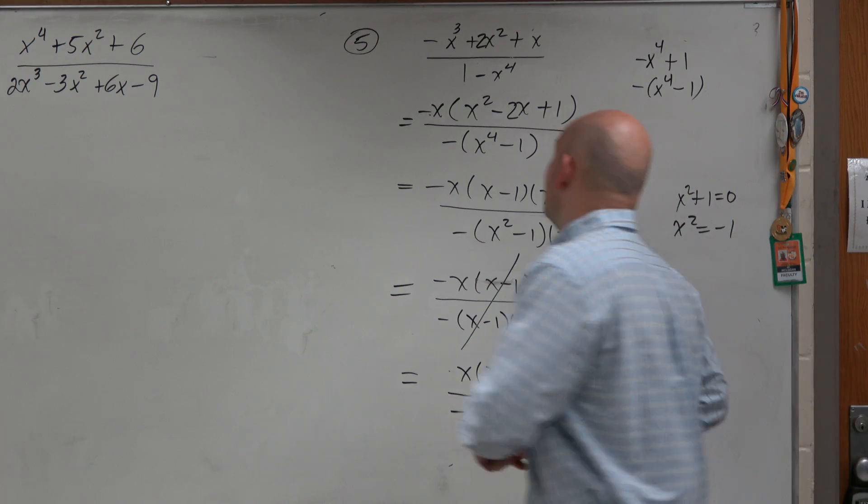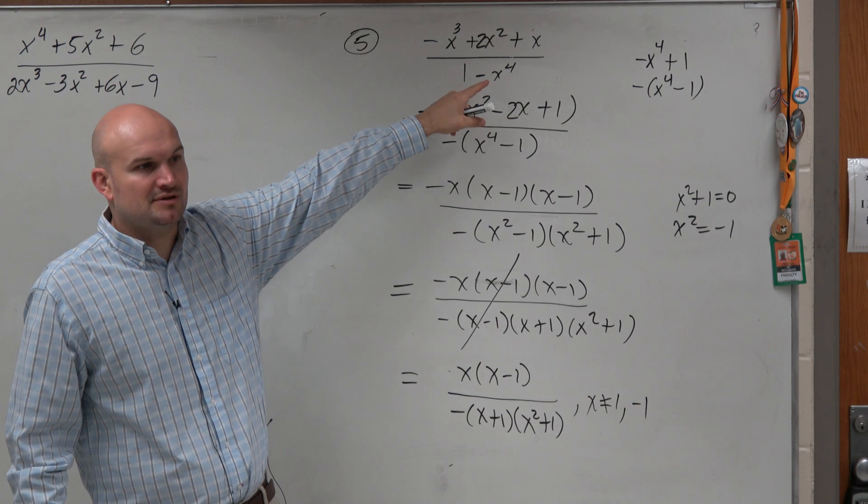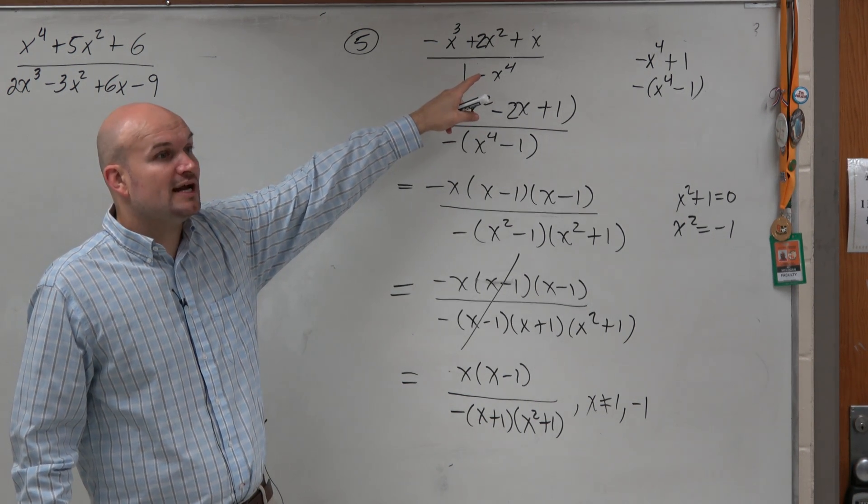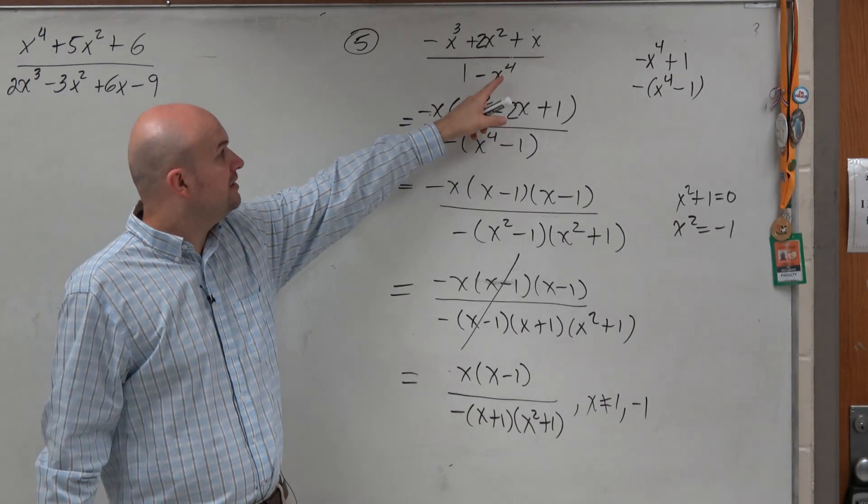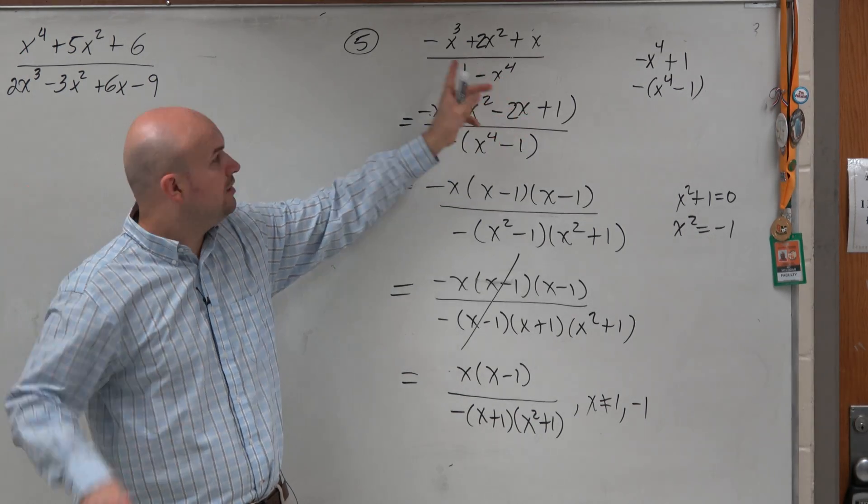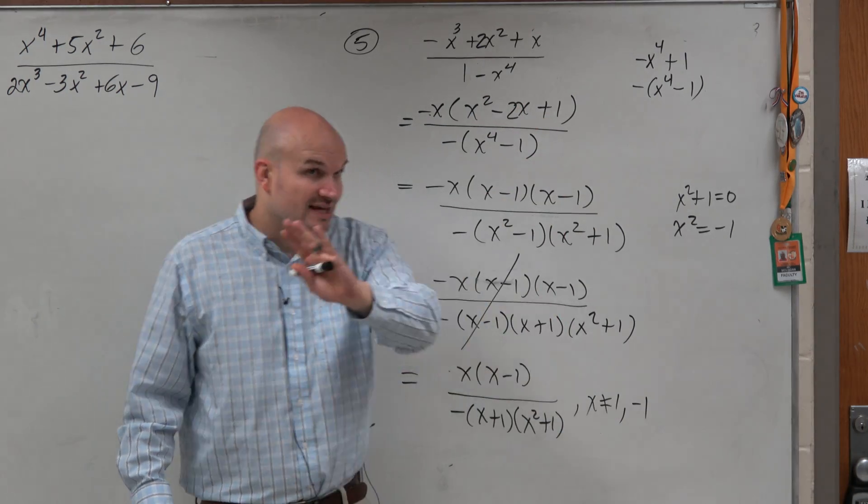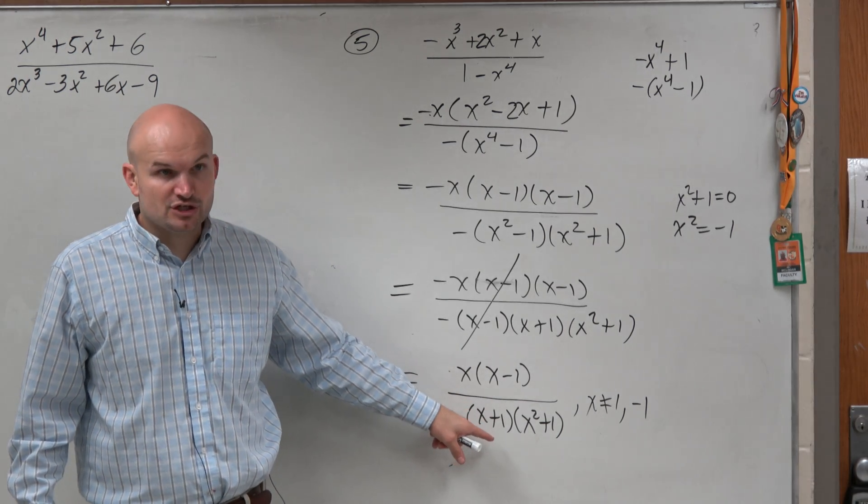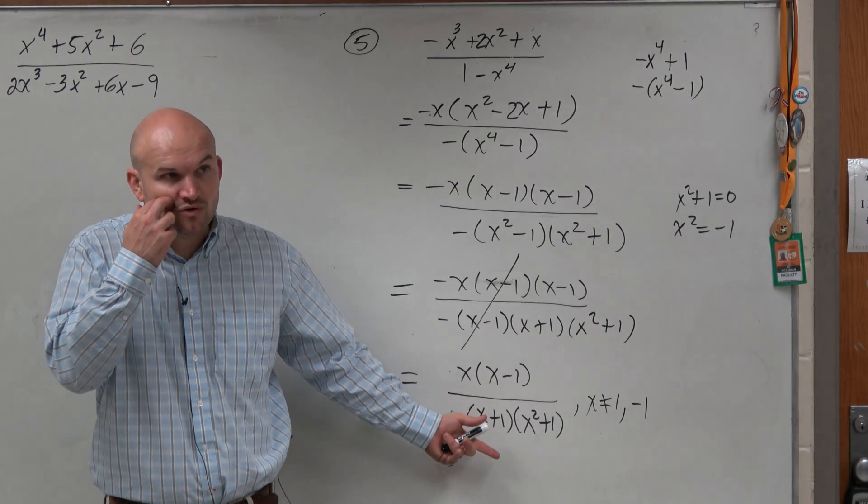Because again, guys, go back up to our original problem. If I plug in a 1 or a negative 1, does that make my denominator equal to 0? If you plug in a 1 or a negative 1, 1 to the fourth power is 1, 1 minus 1 is 0. Negative 1 to the fourth power is 1, 1 minus 1 is 0. So you have two restrictions, even though the simplified result only is going to show one solution, or only shows you that one restriction.